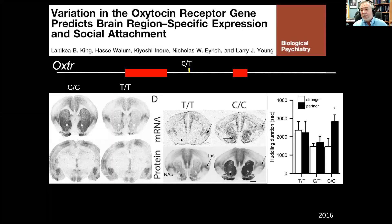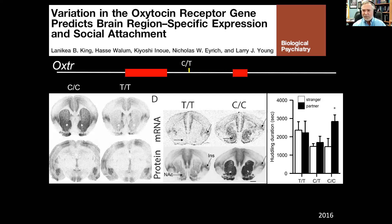In humans, there's evidence that the same thing happens. Ruth Feldman did a study where she took fathers, let them interact with their infants, and gave the fathers intranasal oxytocin. She found that fathers who got oxytocin had more eye-to-eye contact and more reciprocal interactions with their babies. They also had higher levels of salivary oxytocin, and importantly, the babies had higher oxytocin levels too. So engagement of the parent with the child releases early life oxytocin, which can then shape the brain.